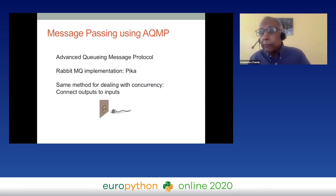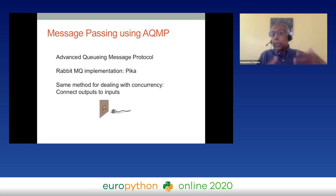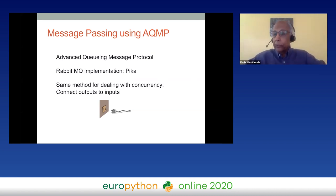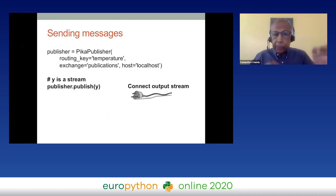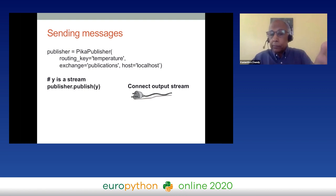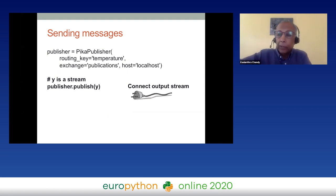For a distributed system, we use the Advanced Message Queuing Protocol. We have implementations in Pika. The key point is that what you need to think about is connecting an output to an input — in the background all these details are handled. Here is a snippet of code to publish a stream using a Pika publisher specified by routing key and exchange. All you do is call publisher.publish(y) where y is the stream, and the stream goes out.